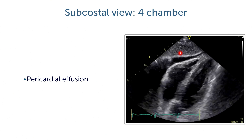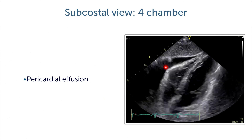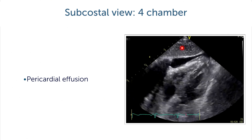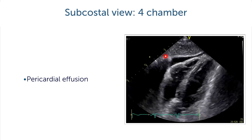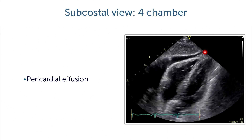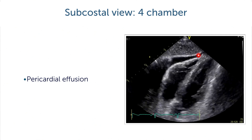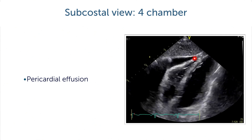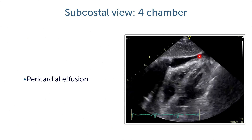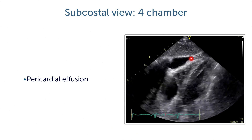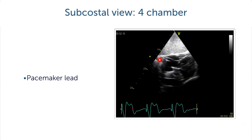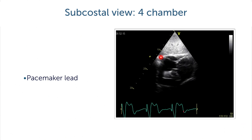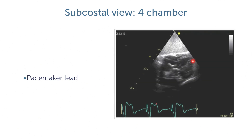Another very important reason to perform a subcostal four chamber view is the detection of pericardial effusion. Here we have a gap between the liver and the heart — this is the diaphragm and also the pericardium. This is the echo-free space. Some structures on the heart represent epicardial fat, but this here is the pericardial effusion. We can also look at pacemaker leads; this view is ideal to follow pacemaker leads as they go through the tricuspid valve into the right ventricle.